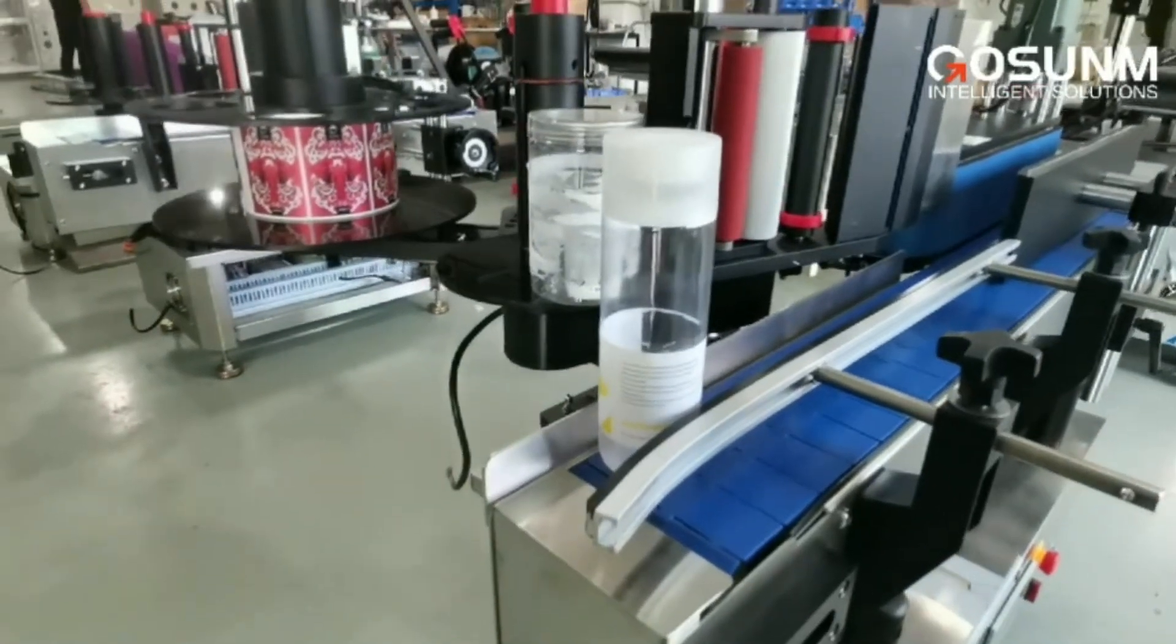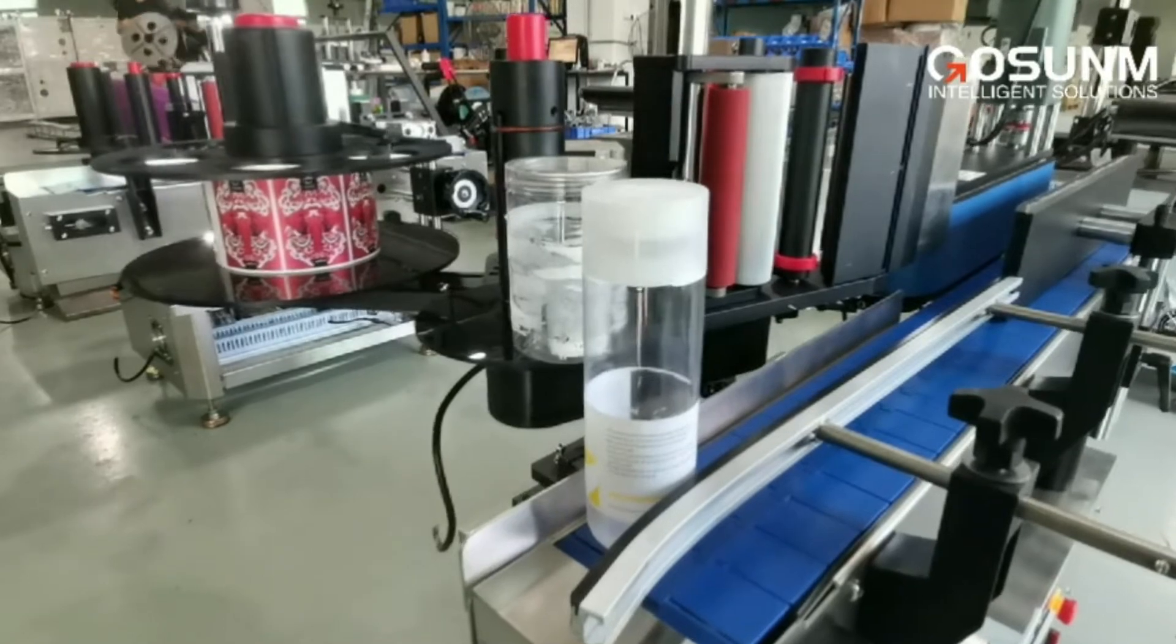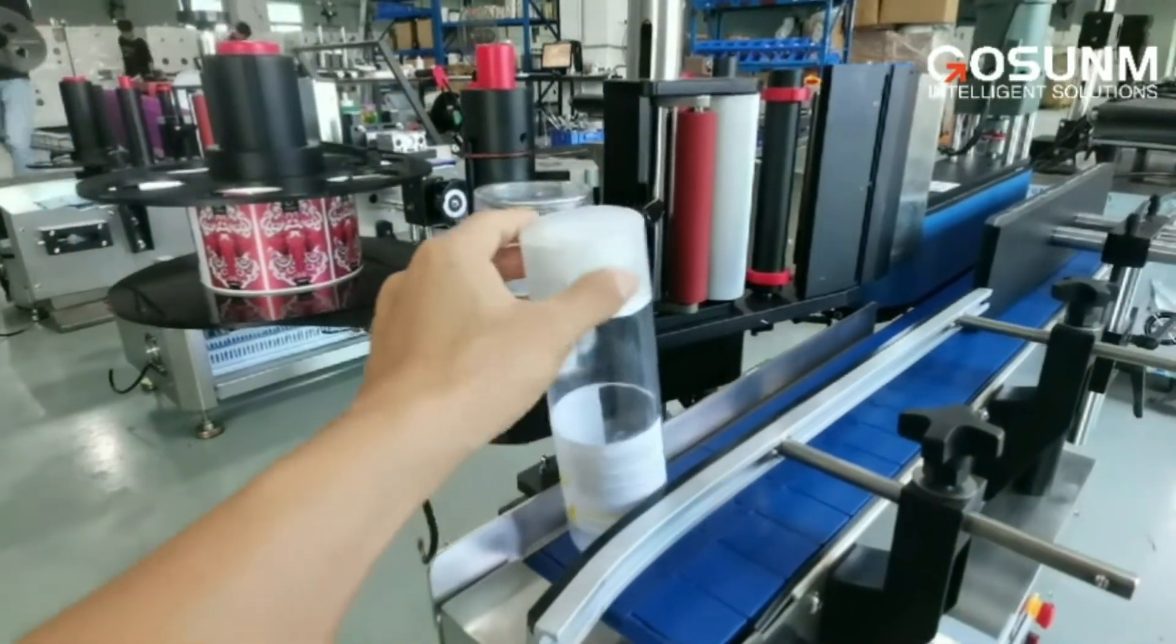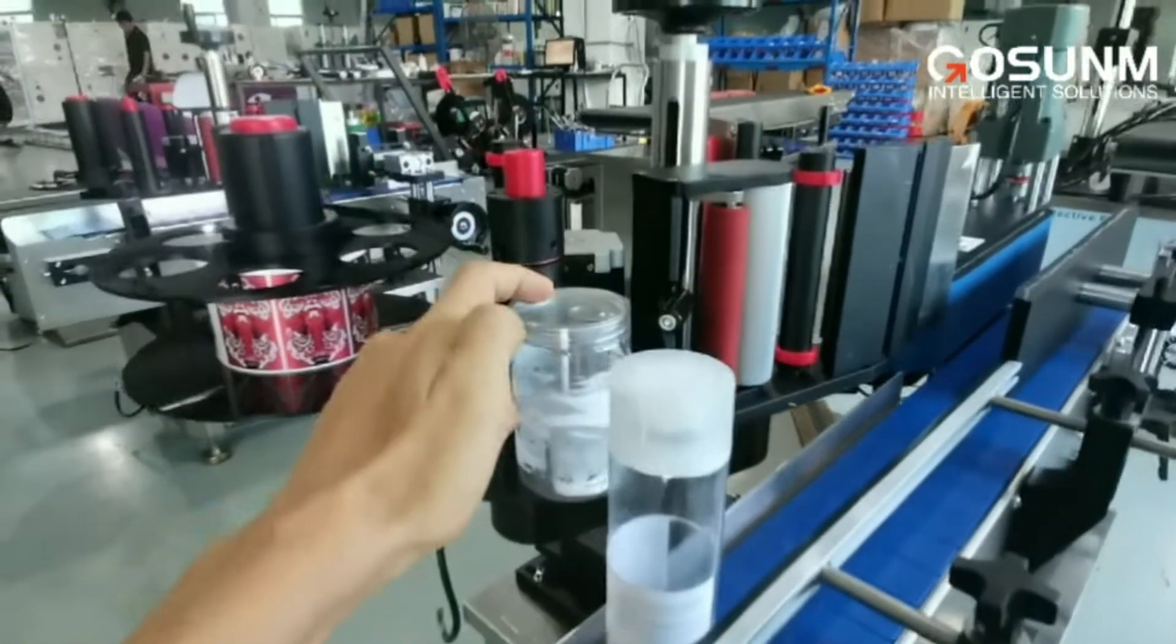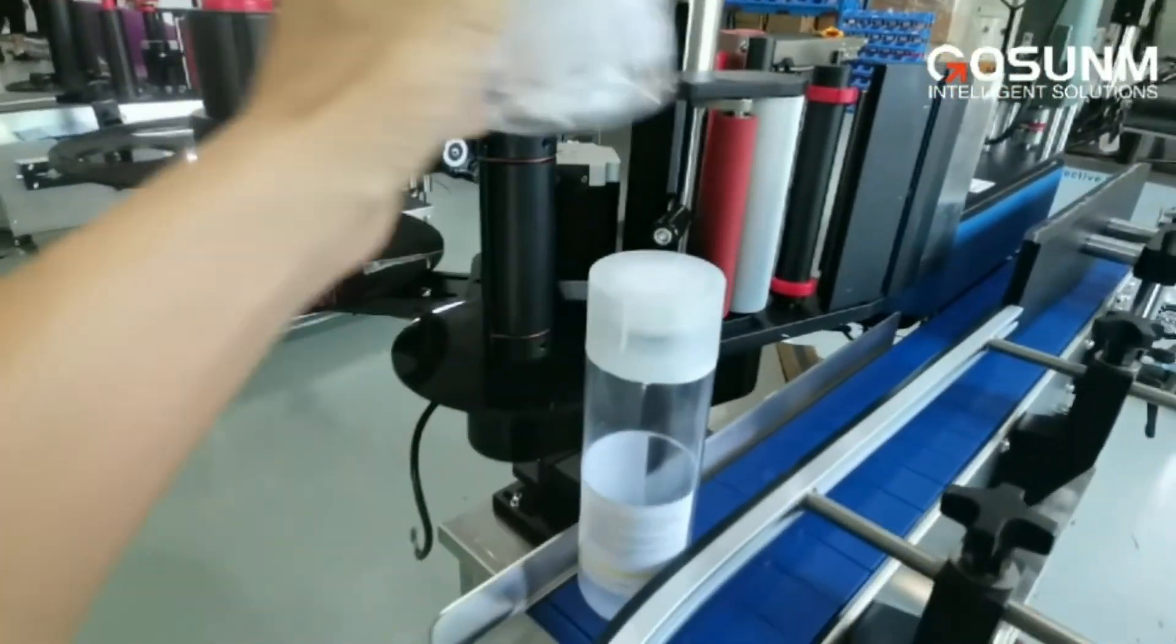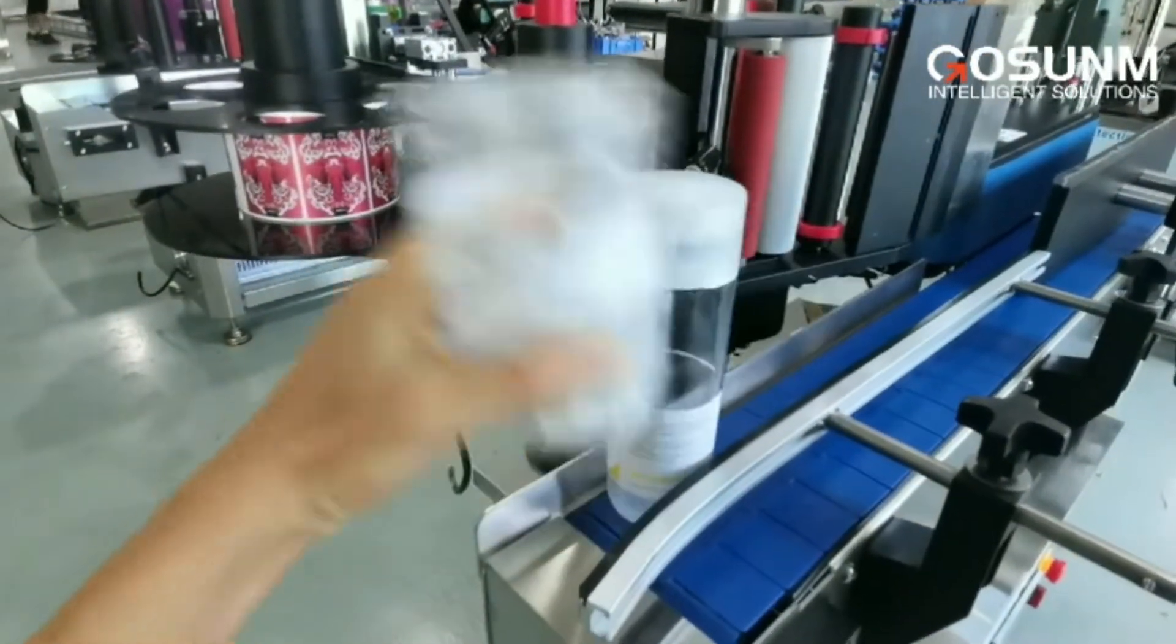What about if there are different size, different diameter bottles? You can see the two bottles have a different diameter. This one is bigger and this one is smaller.